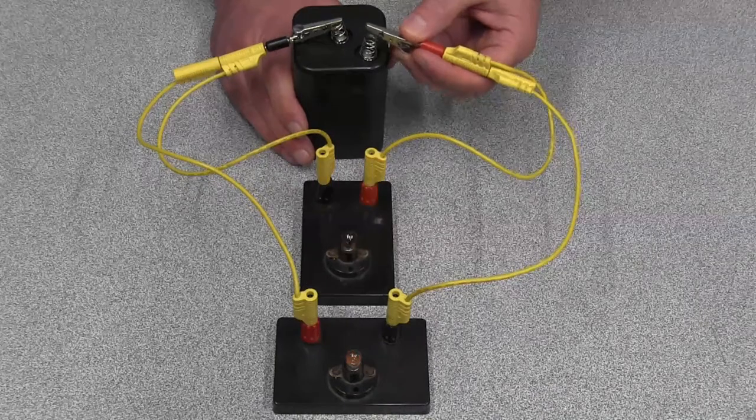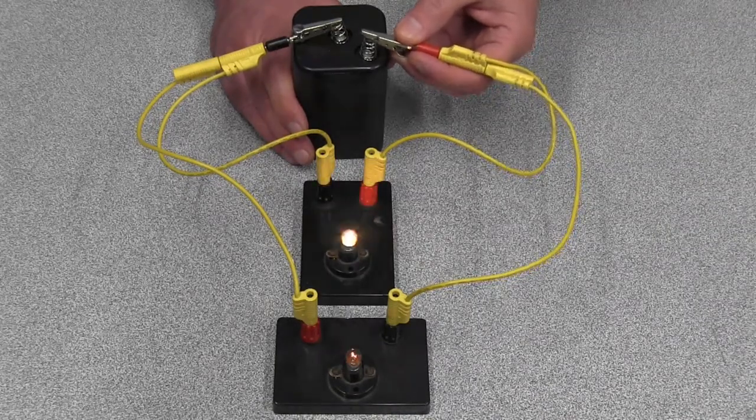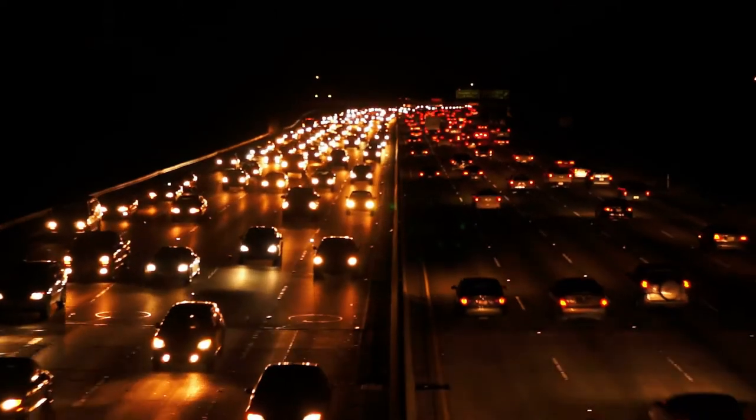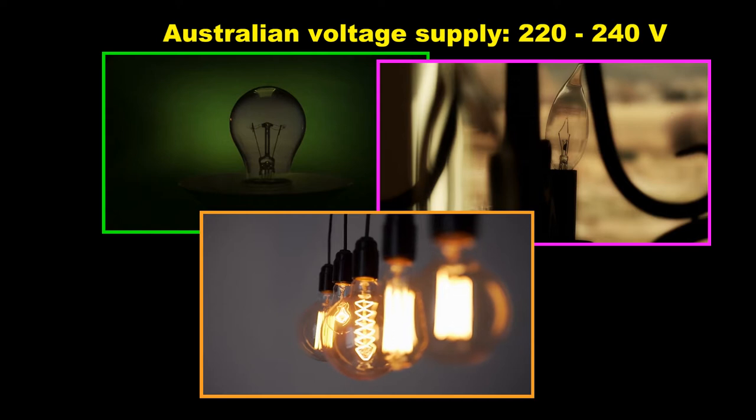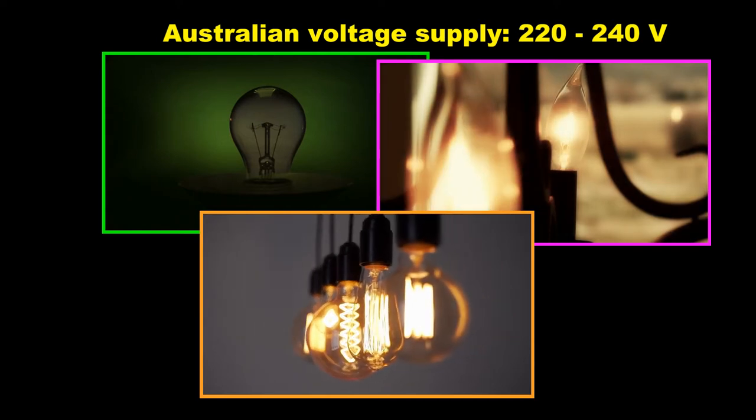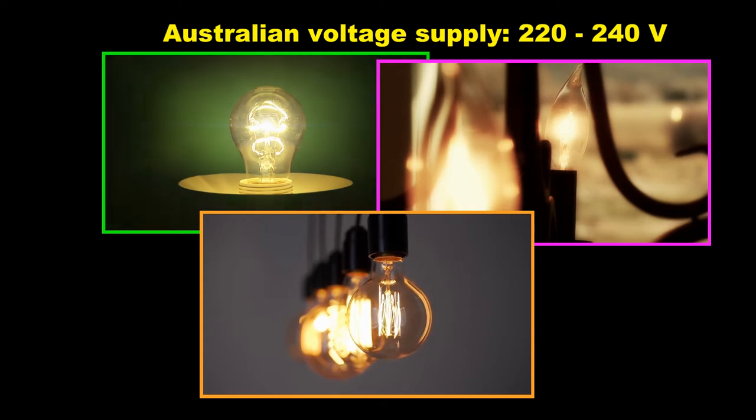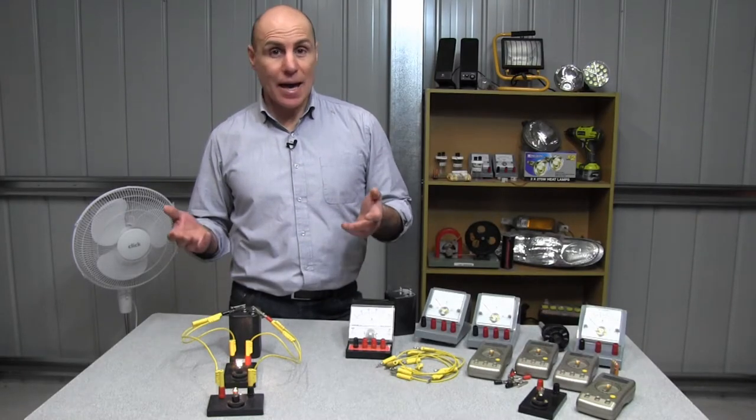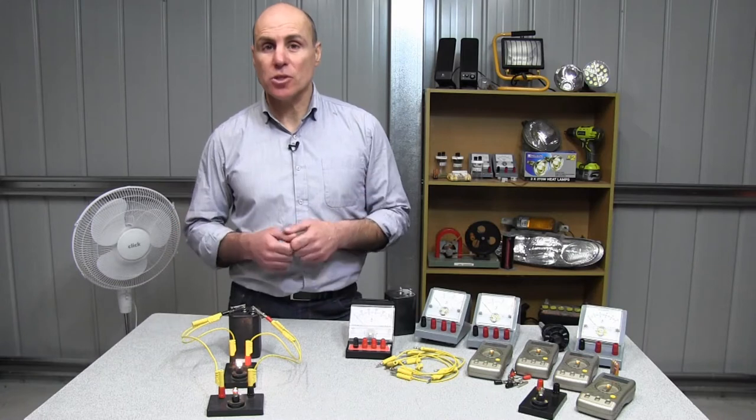However, these light globes have different brightnesses even when they're connected to the same 6-volt battery. The lights in a car have different brightnesses even though they're all connected to the same car battery, and light globes in our houses can have different brightnesses even though they're connected to the same 240-volt main supply. How do manufacturers make light globes and other electrical devices that have different power outputs even when they're connected to the same voltage source?